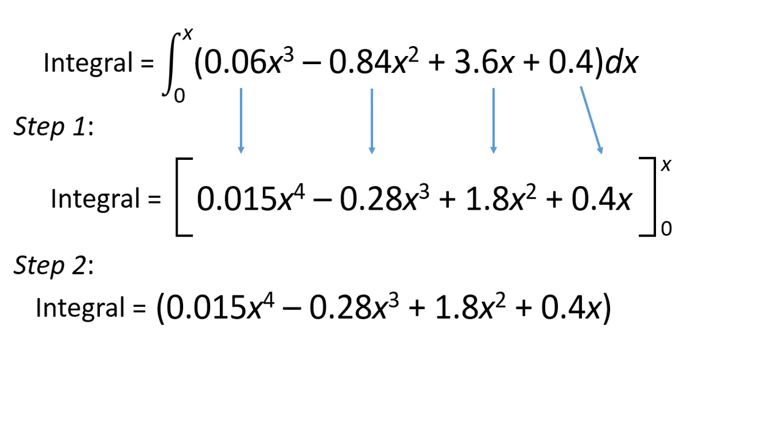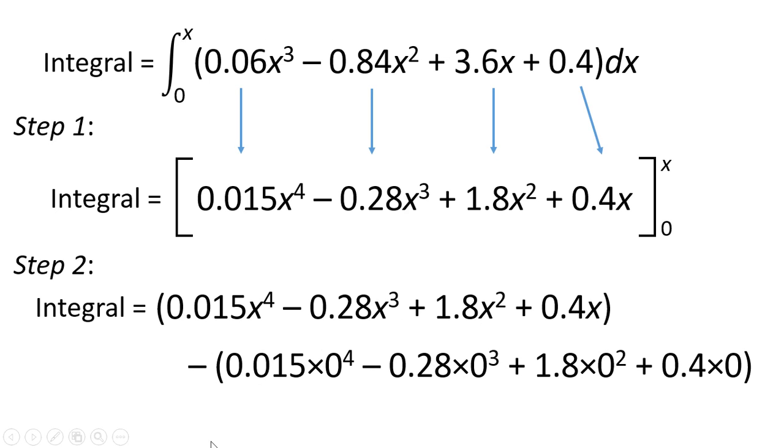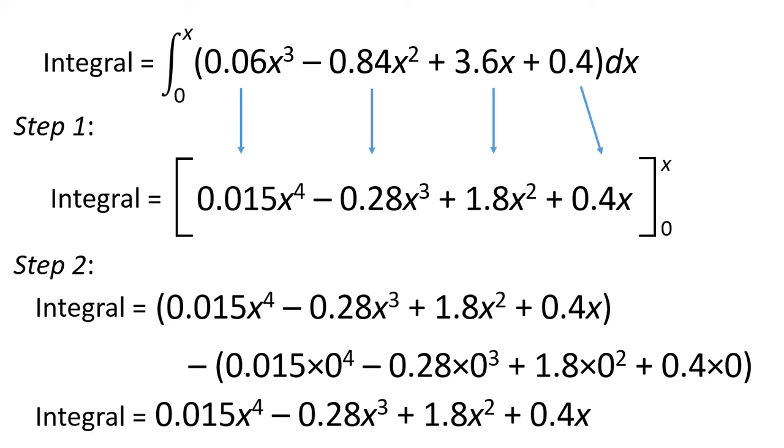But now, in step 2, we just leave the value of x in for this first term. We then subtract the equation, the function, evaluated at x equals 0. This just happens to work out to 0 in this case. So overall, the integral is shown here. And this gives us the area between 0 and any value x for the function that we are interested in.